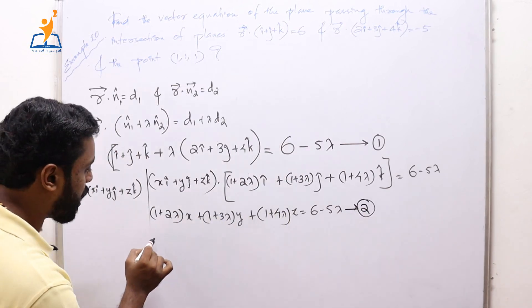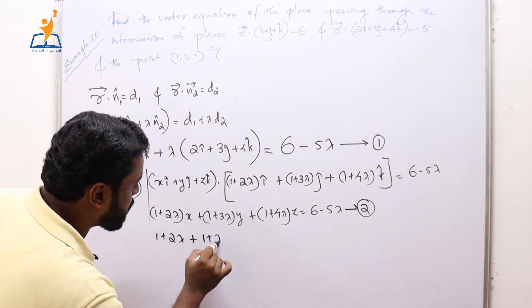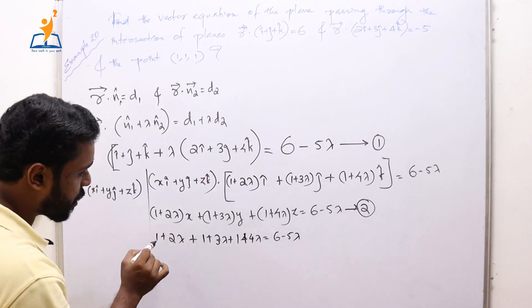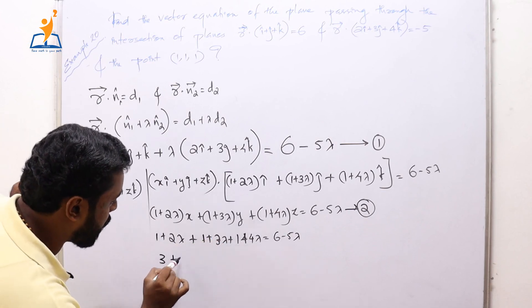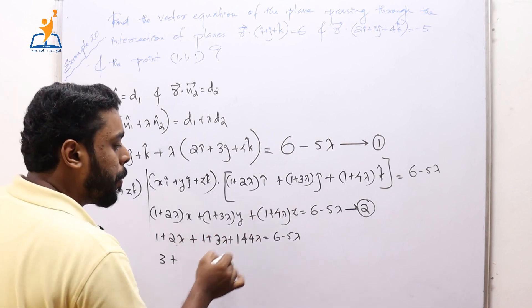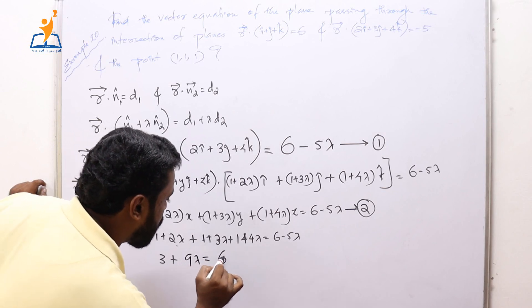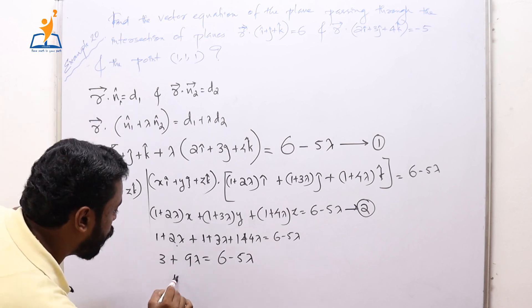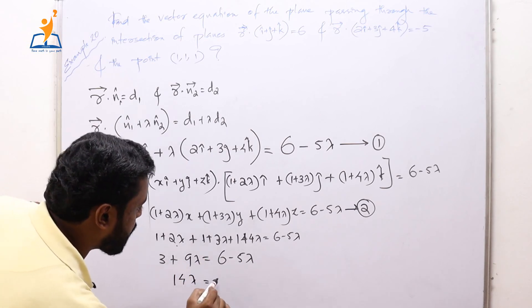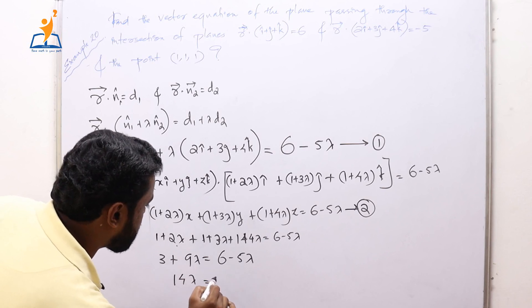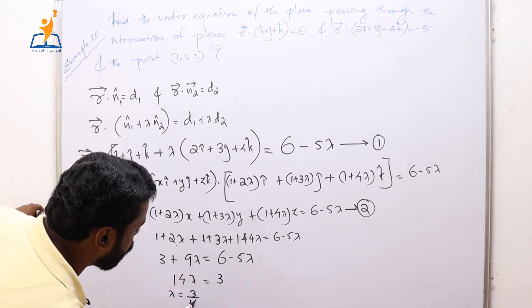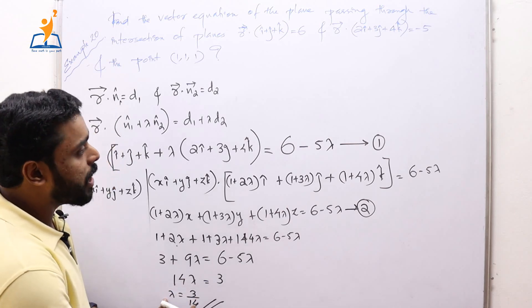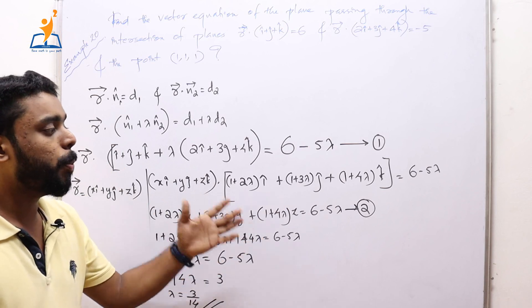Substituting (1, 1, 1) into equation 2: (1 + 2λ) + (1 + 3λ) + (1 + 4λ) = 6 − 5λ, which gives 3 + 9λ = 6 − 5λ. Therefore 14λ = 3, so λ = 3/14.